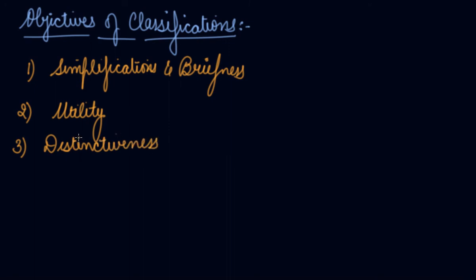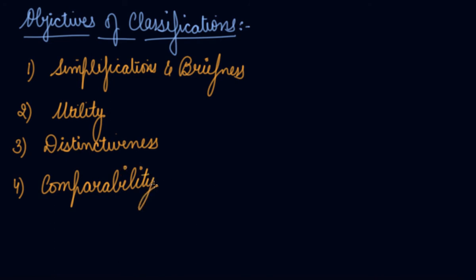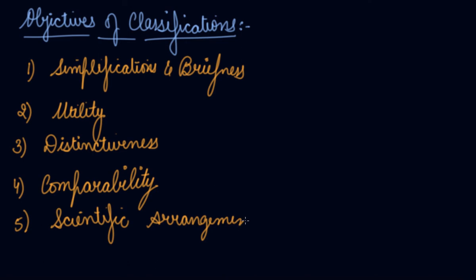Third is distinctive — the data can be differentiated. If you classify it, the obvious differences among the data can be observed. Fourth is comparability — it makes data comparable and estimative. Fifth is scientific arrangement — in order to apply statistical methods on the data to derive results, classification facilitates arrangement of data in a scientific manner, which increases reliability and allows you to apply statistical tools on it.